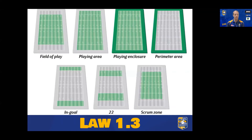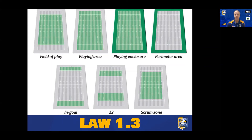This is a visual representation of the definitions. The field of play is shown top left shaded in green — it doesn't include the end goal areas. The playing area includes the end goal areas. The playing enclosure is everything including the perimeter, which must be at least 5 metres. The 22 is the green shaded area. And the scrum zone is 5 metres in from each of the touch lines and the try lines — that's where a scrum can be held. Scrums cannot be held anywhere outside that zone.